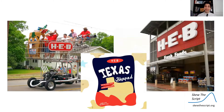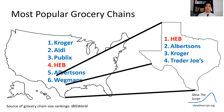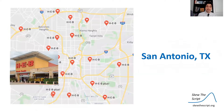I'm going to give you some context for the data set we're going to look at. HEB is a large chain of grocery stores based in Texas. It's the fourth largest chain of grocery stores — after Kroger, Aldi, Publix, and Albertsons and Wegmans. But in Texas specifically, HEB is by far the largest grocery chain. HEB owns Texas, and we love it.